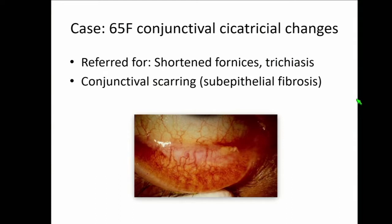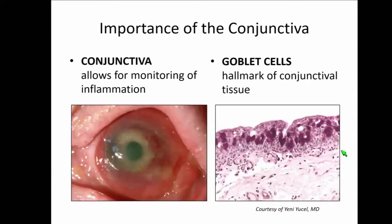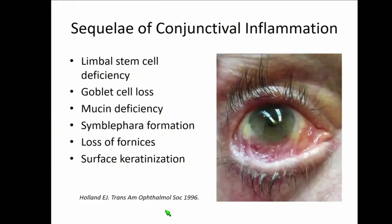We'll start with this photo: a 65-year-old female with conjunctival cicatricial changes. She's been referred for shortened fornices and trichiasis, and on slit-lamp exam we see this area of conjunctival scarring and some early sub-epithelial fibrosis beginning. You can tell when the conjunctiva is inflamed it is red, and the goblet cells are very important as a hallmark of conjunctival tissue — that is key in the diagnosis for limbal stem cell deficiency.